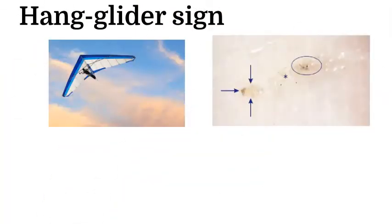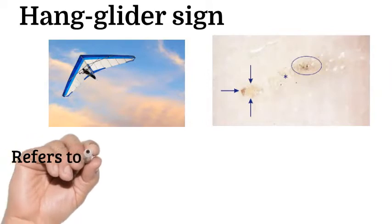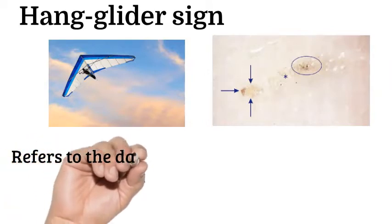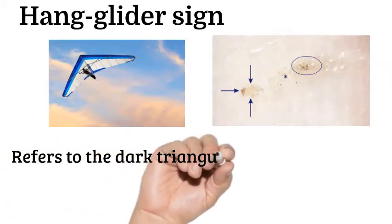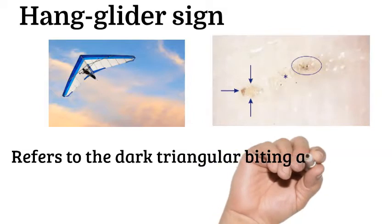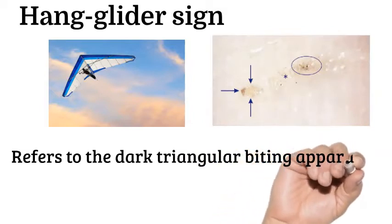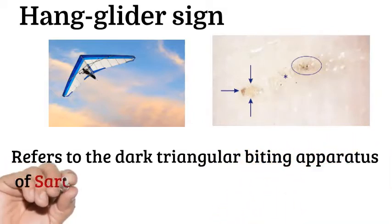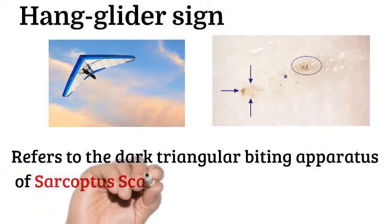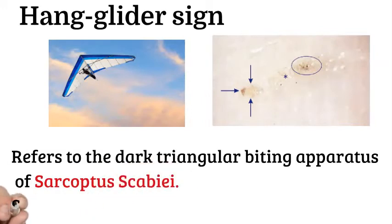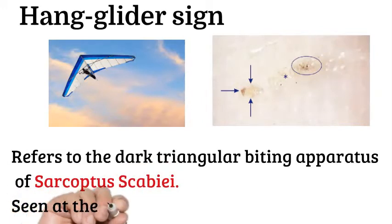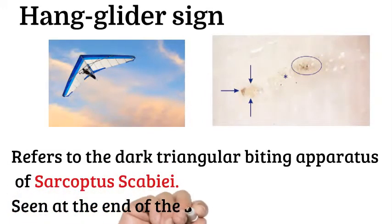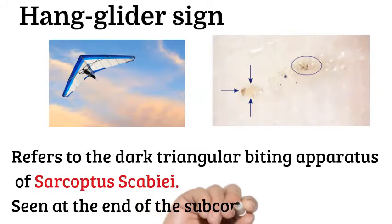Hang glider sign: the first picture shows a hang glider and the second picture shows the hang glider sign. This sign refers to the dark triangular pitting apparatus of Sarcoptes scabiei seen at the end of the subcorneal tunnel.